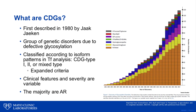CDG are currently named by the defective gene followed by the term CDG — so for example, PMM2 CDG. Clinical features are heterogeneous and the majority of these are autosomal recessive. Most defects are in protein glycosylation, although an increasing number are defects of glycolipid or proteoglycan biosynthesis.